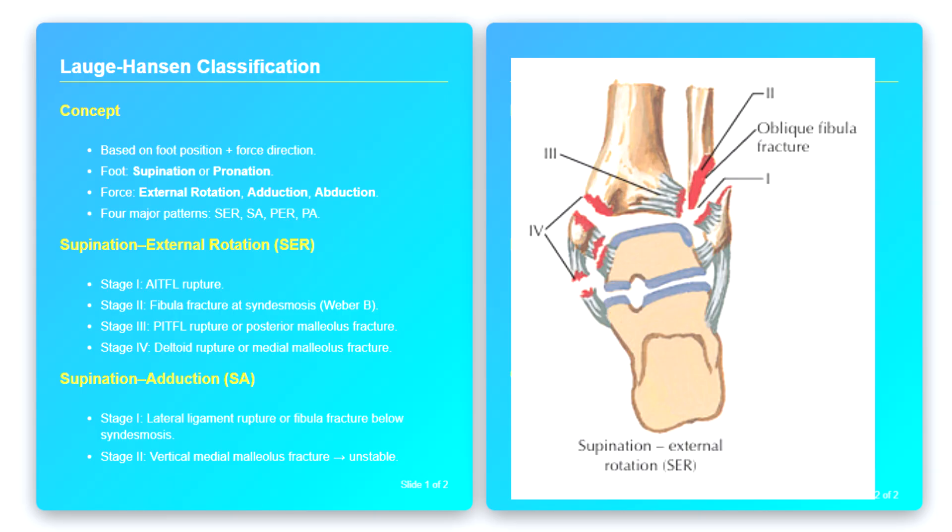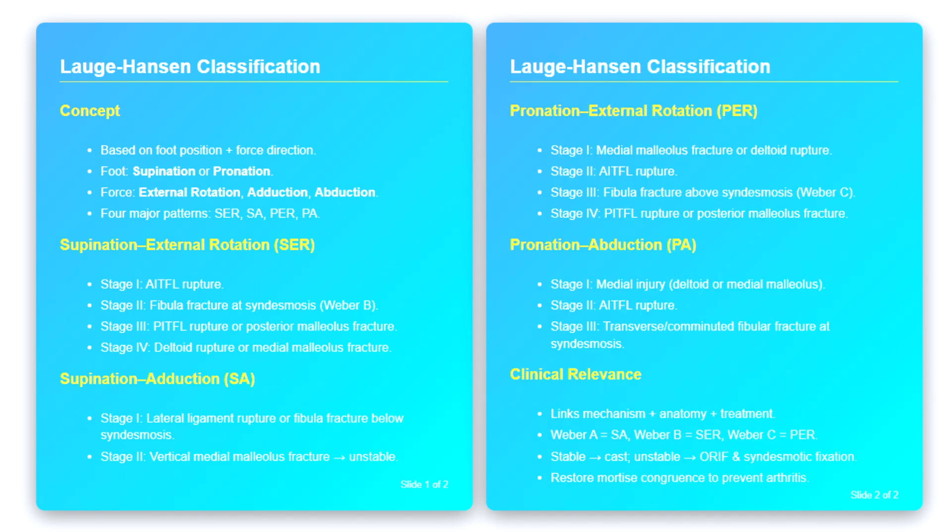Clinically, this mechanism is common in sports and twisting injuries, and understanding the sequence allows us to recognize that if we see a Weber B fibular fracture, we must carefully examine the posterior malleolus and medial structures for associated injury.